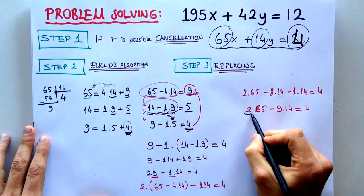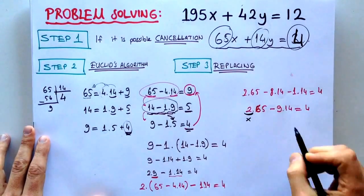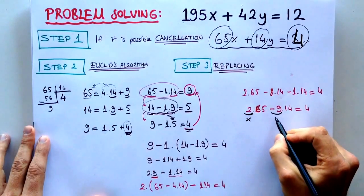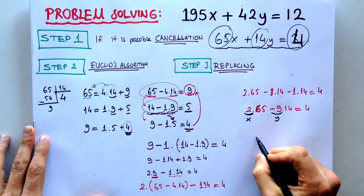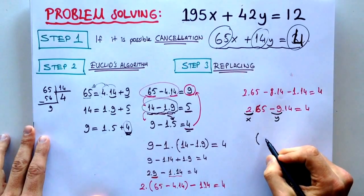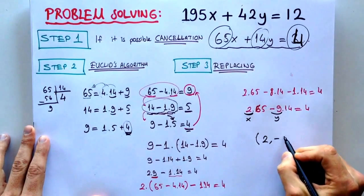2 times 65 minus 9 times 14 is equal to 4. We conclude that, you see, x should be 2, y should be minus 9. We have an integer solution like this: 2, minus 9.